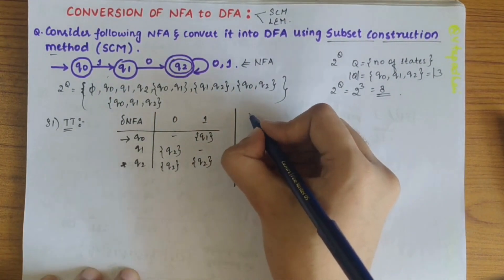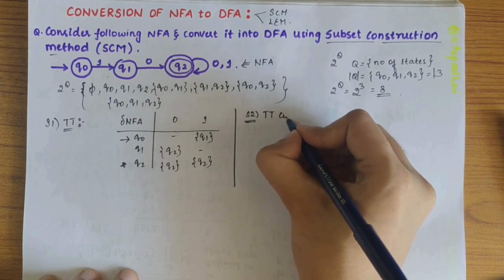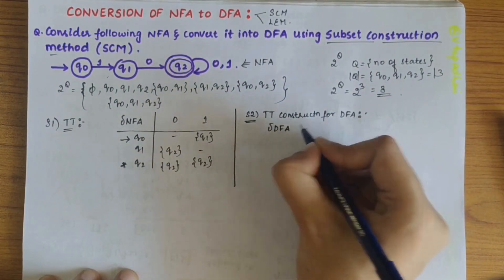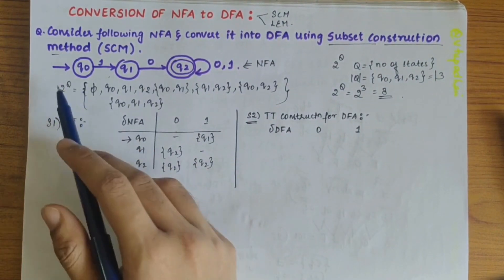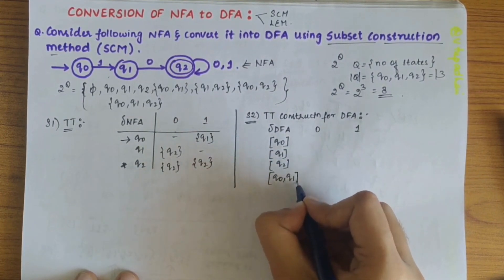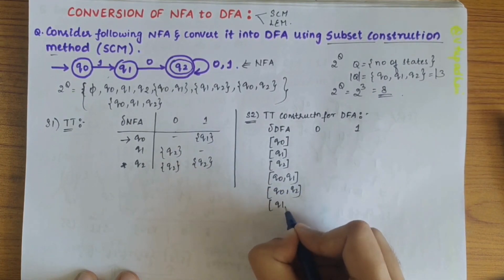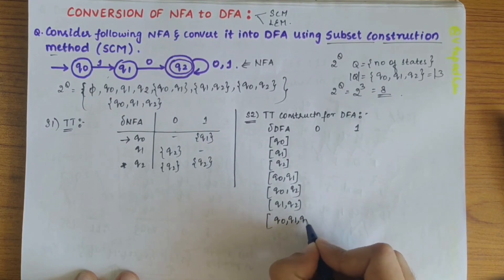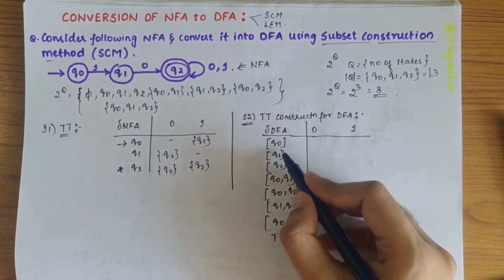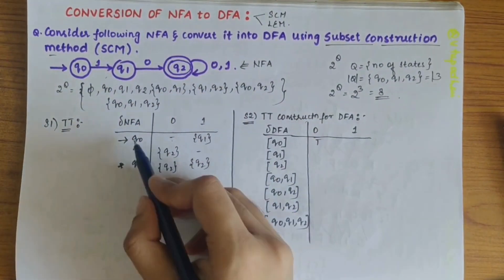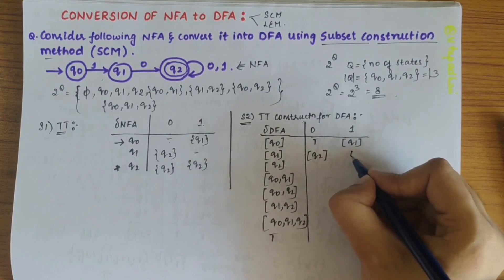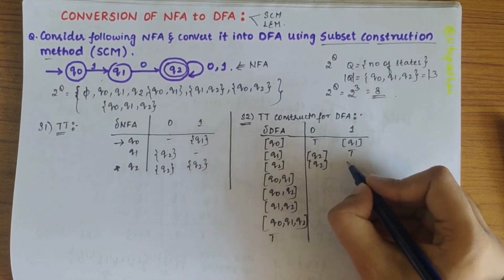Step two is to construct the transition table for the DFA. We consider all 2^Q possible states: [Q0], [Q1], [Q2], [Q0,Q1], [Q0,Q2], [Q1,Q2], [Q0,Q1,Q2], and the null state ∅. Filling the table: Q0 on 0 gives ∅, Q0 on 1 gives [Q1]. Q1 on 0 gives [Q2], Q1 on 1 is undefined so ∅. Q2 on 0 gives [Q2], Q2 on 1 also gives [Q2].